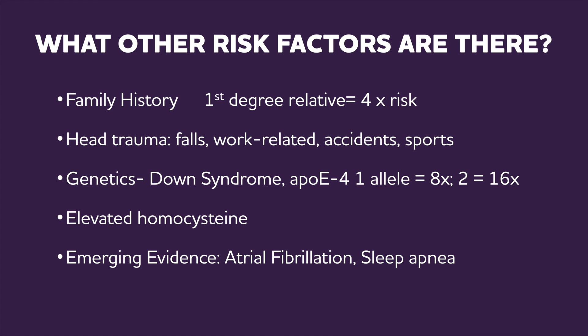What other risk factors are there? First, family history — if there is a first-degree relative, we have four times the risk for Alzheimer's or related dementia. We also look at head traumas, falls, work-related incidents, accidents, and sports-related concussions. We also look at genetics, including Down syndrome and APOE4, which is present in approximately 20% of the population and increases the risk of Alzheimer's by at least eight times.